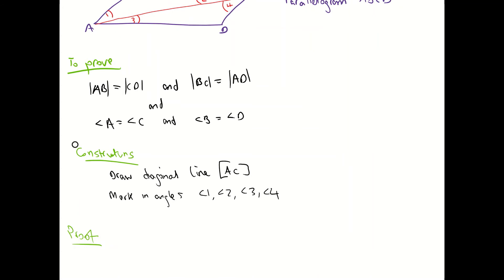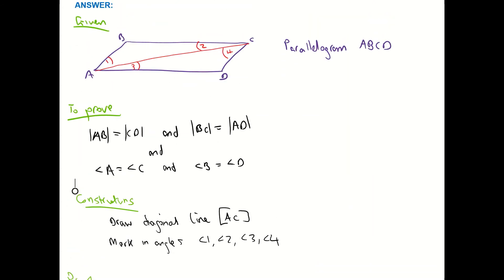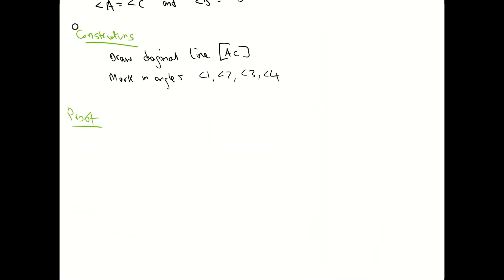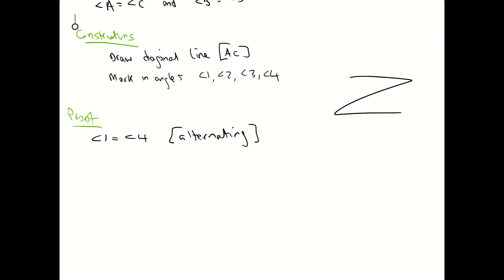The first thing I'm going to state is that angle 1 is equal to angle 4, because they are alternating angles. And then I'm going to state that angle 3 is equal to angle 2, because they're also alternating. Our alternating is that Z shape — don't forget that. So geometry is very important for this terminology.